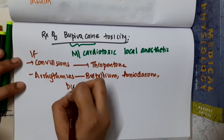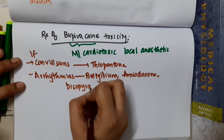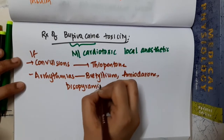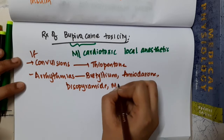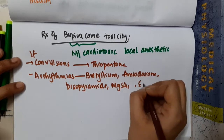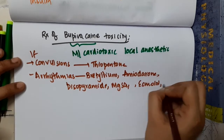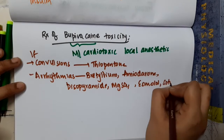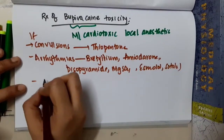Then disopyramide, then magnesium sulphate. Esmolol and sotalol can also be given.